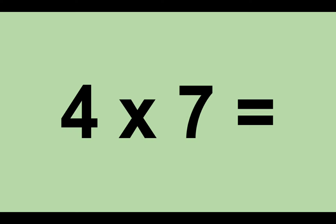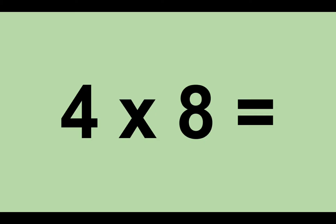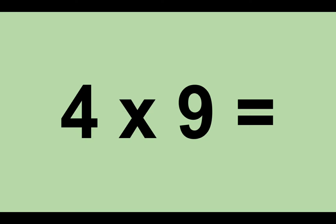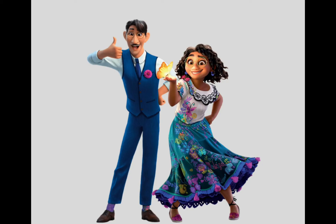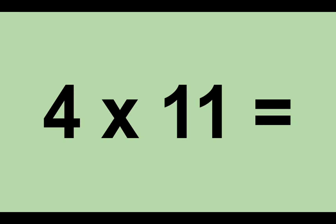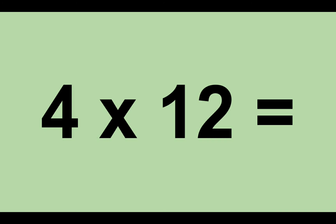Four times seven equals twenty-eight. Four times eight equals thirty-two. Four times nine equals thirty-six. Four times ten equals forty. Four times eleven equals forty-four. Four times twelve equals forty-eight.